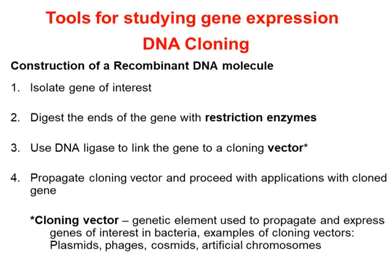الـ cloning يعني استخدام الـ cloning vector — وهو الـ plasmid أو غيره — لتضخيم الـ gene of interest وإحداث التعبير الجيني (expression) في البكتيريا. من أنواع الـ cloning vectors: الـ plasmid، والفاج (bacteriophage)، والـ artificial chromosomes مثل الـ YAC والـ BAC.